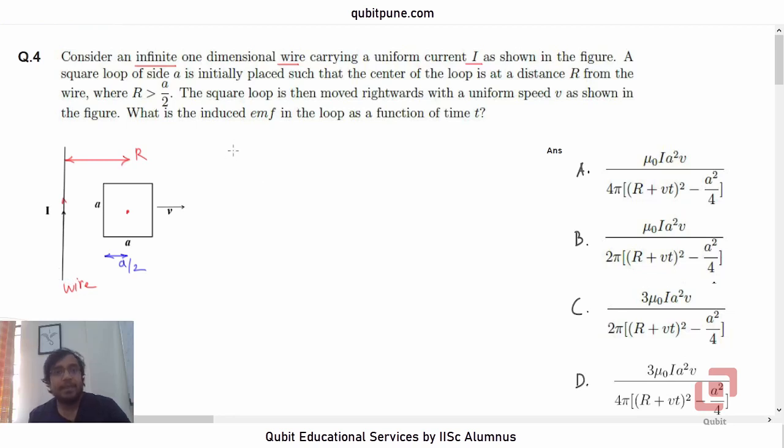Next, the square loop is then moved rightwards with a uniform speed V as shown in the figure. So this is the uniform speed V. So this loop is basically going away from the current carrying wire. What is the induced EMF in the loop as a function of time t?